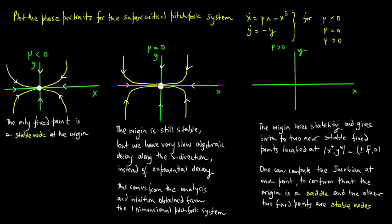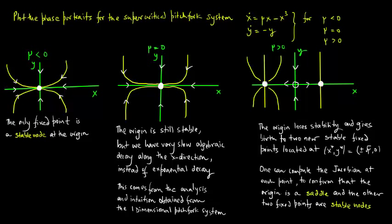Let us plot the phase portrait for the system. We have highlighted the saddle at the origin and those are the two stable nodes. That fills out the full phase portrait for this system.